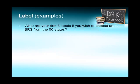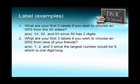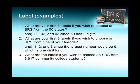Let's do some examples. What are your first three labels if you wish to choose an SRS from the 50 states? 50 has two digits, so you're going to go with 01, 02, 03, all the way up to 50. What are your first three labels if you wish to choose an SRS from nine of your friends? You want the shortest label possible, so you're going to go with 1, 2, 3, 4, 5, 6, 7, 8, 9.